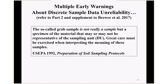There were a lot of early warnings about these problems with discrete sample data. We looked at old documents from the 1980s and 1990s. A 1992 warning stated: the so-called grab sample or discrete sample is not really a sample, but a specimen of the material that may or may not be representative of the sampling unit, and great care must be exercised when interpreting the meaning of these samples.